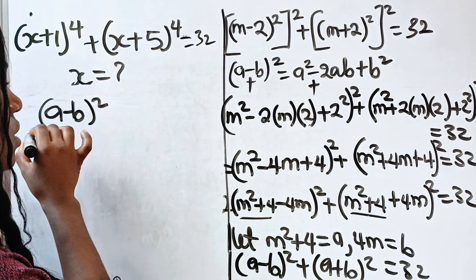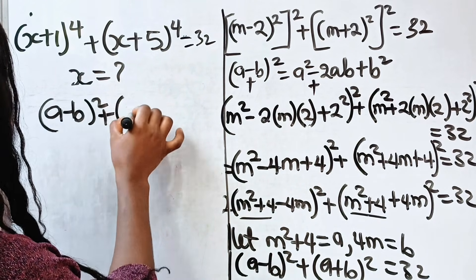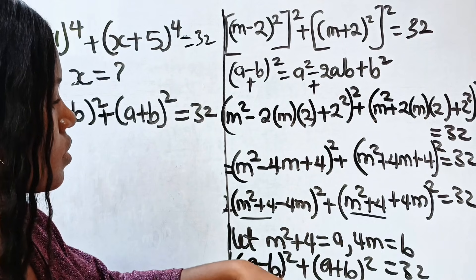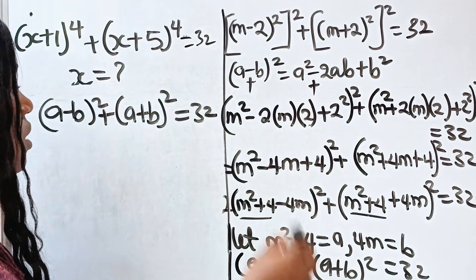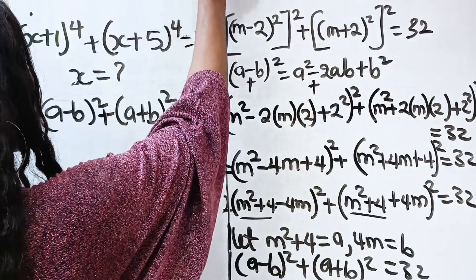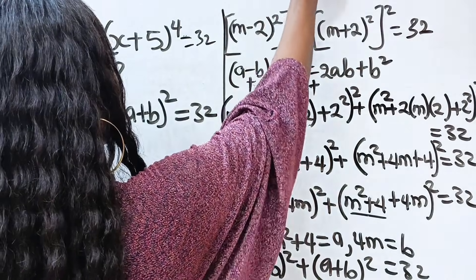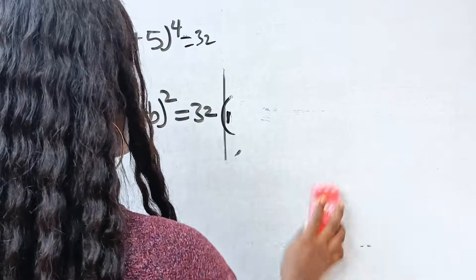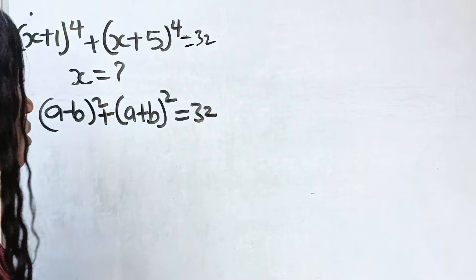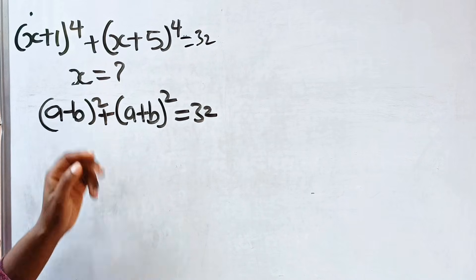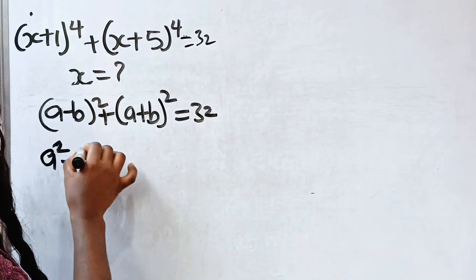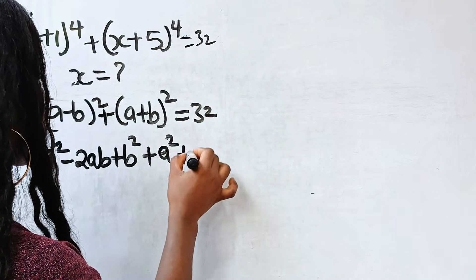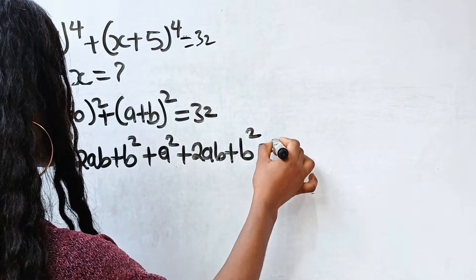Opening the brackets: (a minus b) squared plus (a plus b) squared gives a squared minus 2ab plus b squared, plus a squared plus 2ab plus b squared, and this equals 32.